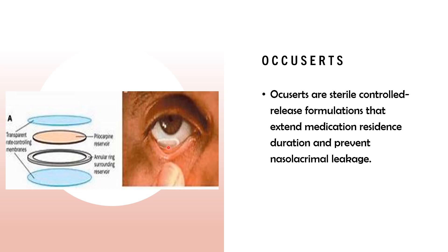As you can see in this picture, this is an Ocusert. It is a sterile dosage form prepared for controlled release. The drug release is in a controlled manner, and because this Ocusert is to be placed into the cul-de-sac, its residence is increased, and because of increased residence, the bioavailability of the drug is increased. The major advantage is that there is no nasolacrimal drainage. The drug released from this Ocusert will move into the vitreous humor through the cornea, through scleral tissue, and through subconjunctival tissue, so the major part of the drug moves into the ocular tissue.